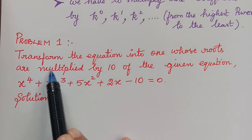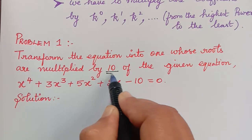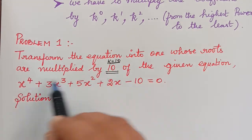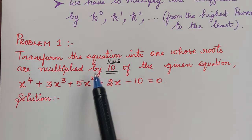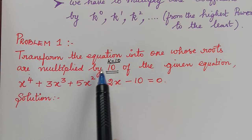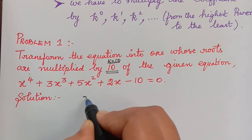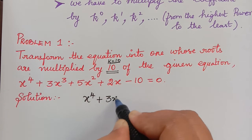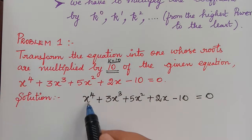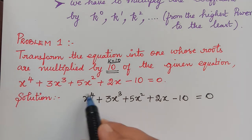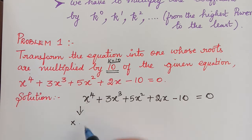The question is: transform the equation into one whose roots are multiplied by 10. The value of k for this problem is k = 10. The equation is given here, and we are asked to transform it into another equation whose roots are multiplied by 10. The given equation is x power 4 + 3x cube + 5x squared + 2x − 10 = 0. The coefficient of x power 4, the highest power, is 1, and that has to be multiplied by k power 0, which is 10 power 0.